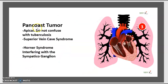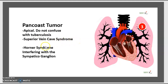The third category is Pancoast tumor. It is apical — do not confuse it with tuberculosis. It is associated with superior vena cava syndrome and Horner syndrome, which occurs due to interference with the sympathetic ganglion.